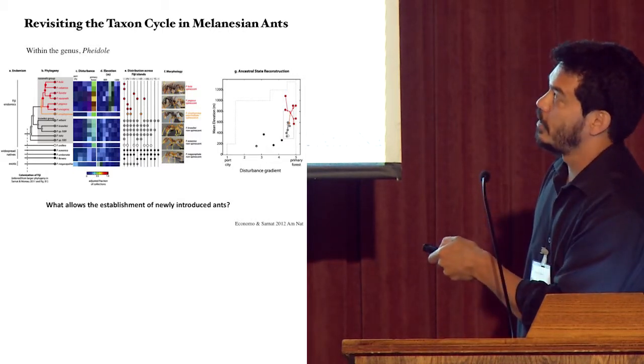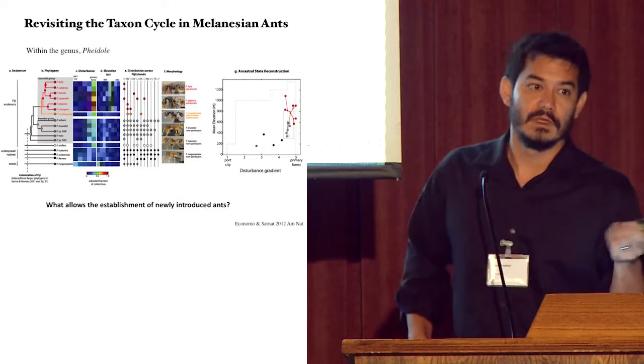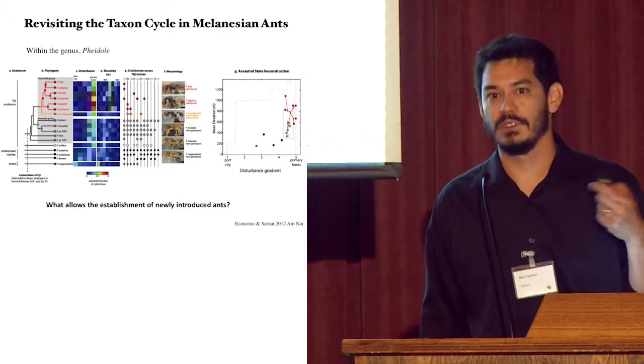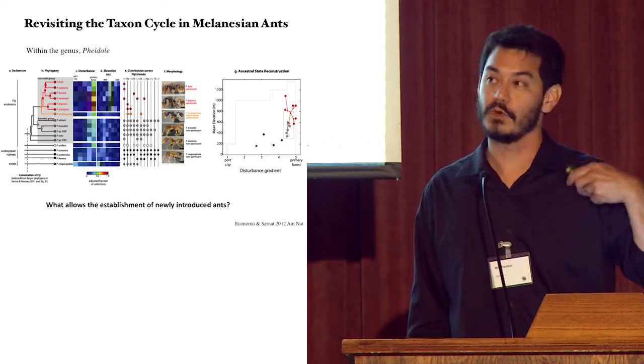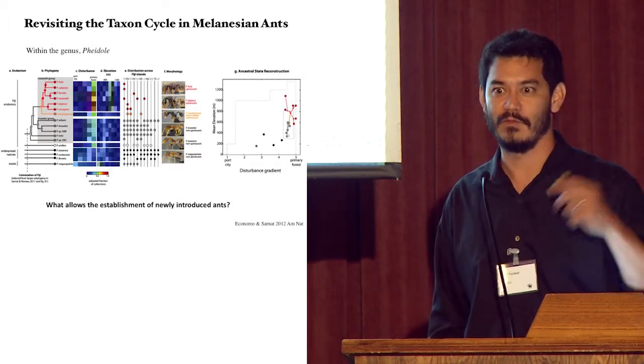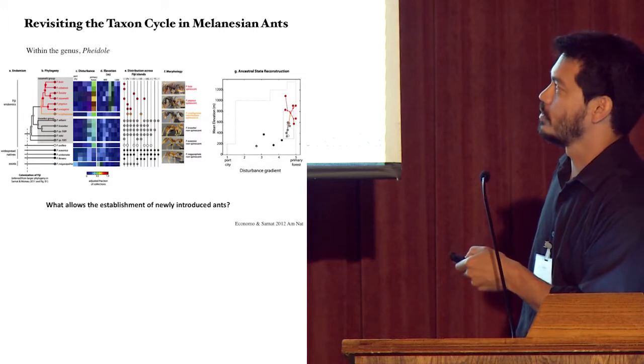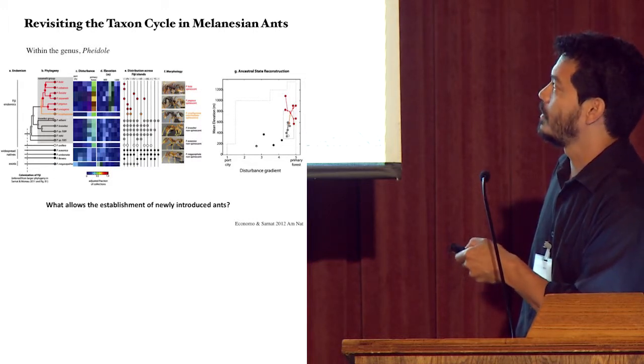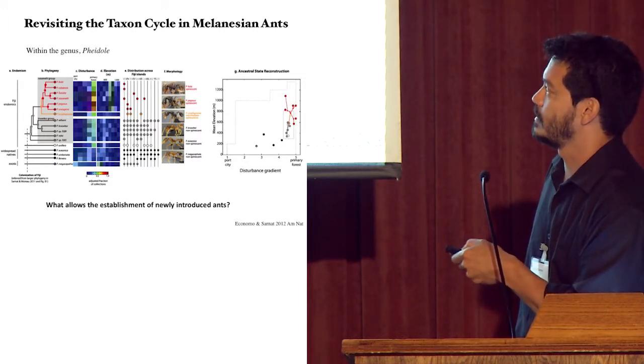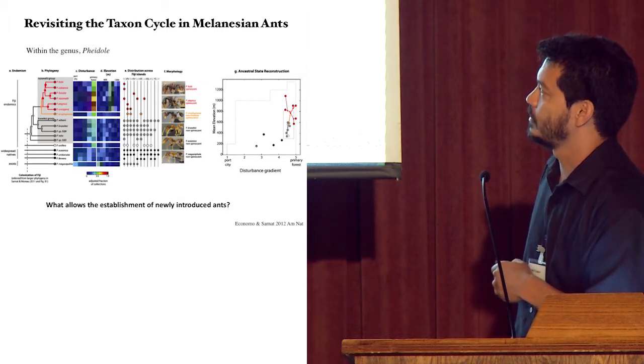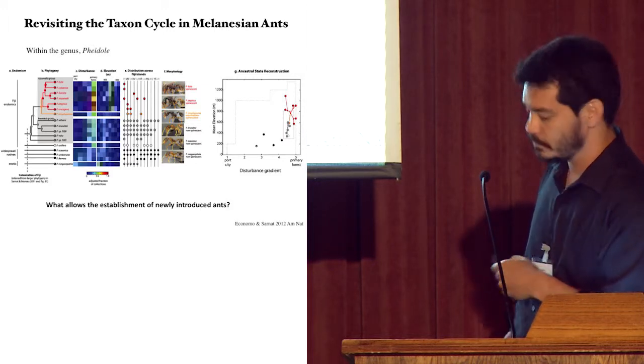And so this pattern, shown by this group anyway, is entirely consistent with what we would expect to see under the taxon cycle. What's going on with this group? We don't know. It's possible, there's no expectation that all species will progress through the cycle at the same rate in a clock-like fashion. It may be that these will do so at some point in the future, or it may be that there are other forces that are dictating the evolutionary trajectory of the species group.